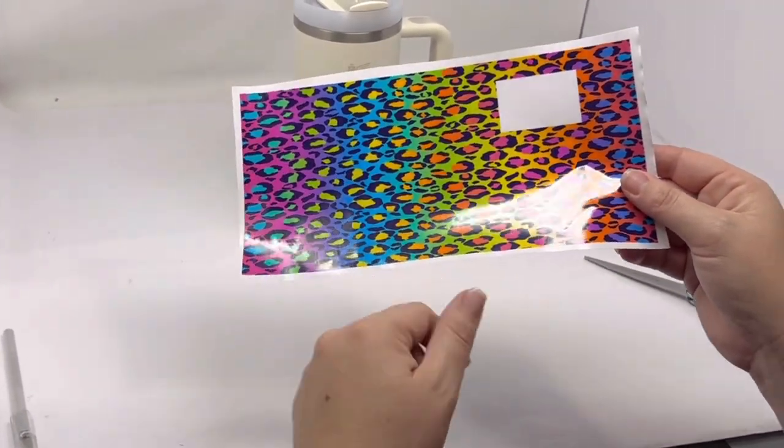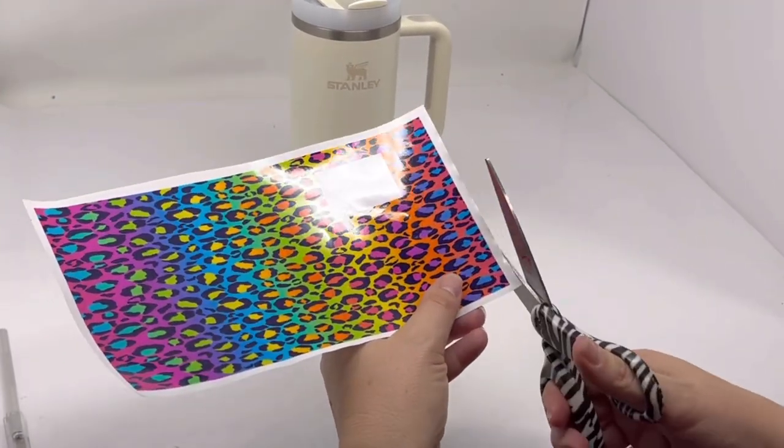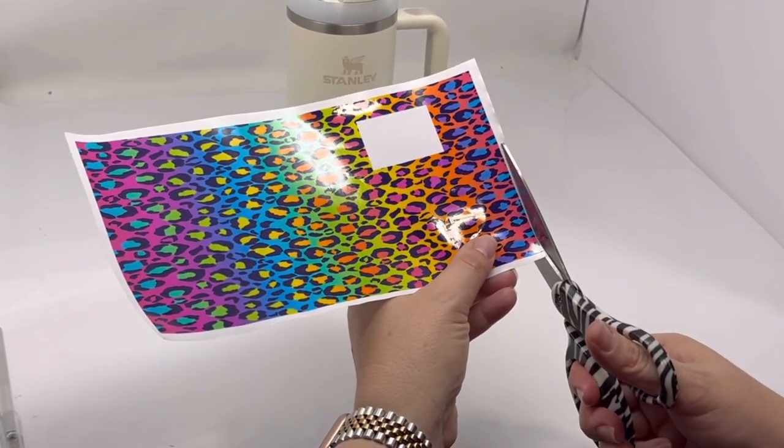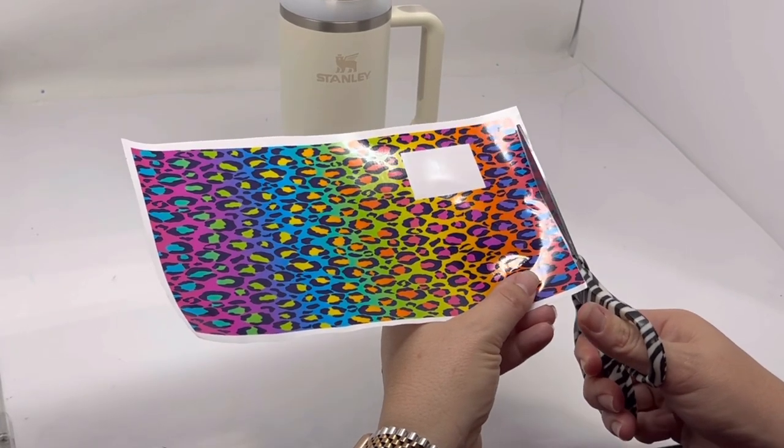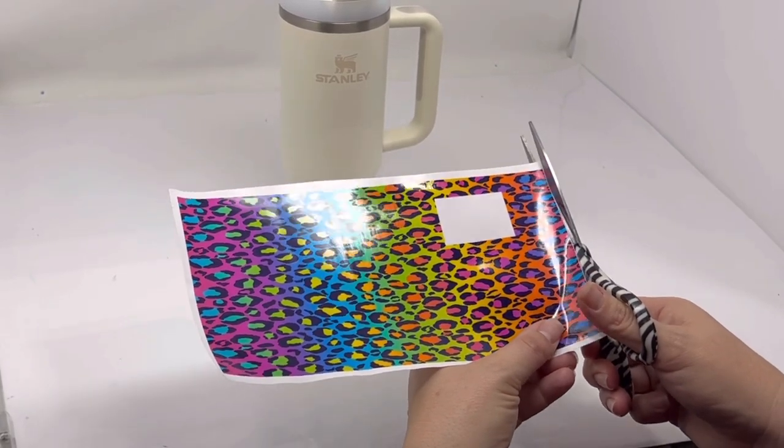So what I do is take my scissors, cut as close to that line as I can so that I have a nice even line for wrapping it on the handle.